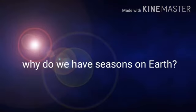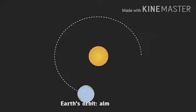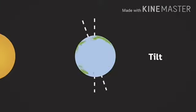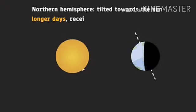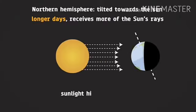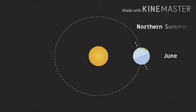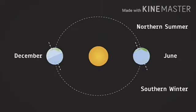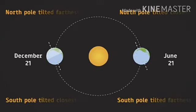Next: why do we have seasons on Earth? Because of the rotation of the Earth around the sun with a 23.5 degree tilt. Due to this tilt, the northern hemisphere tilts towards the sun, resulting in longer days and more direct sunlight. In June, the northern hemisphere is towards the sun, so it experiences summer while the southern hemisphere experiences winter. In December, the northern hemisphere is away from the sun, so it experiences winter while the south experiences summer.